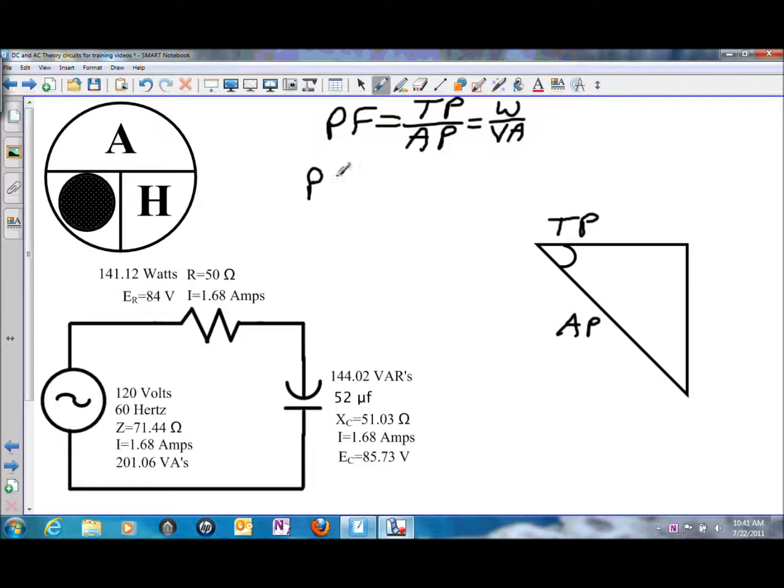So power factor is going to be equal to 141.12 watts divided by 201.06 volt amps. And punching that into the calculator, when you hit the equals button on that, it's going to be approximately .701 or 70% on your power factor.